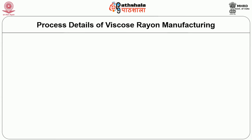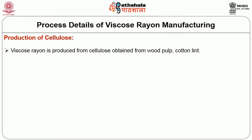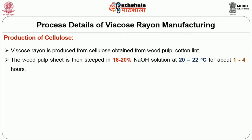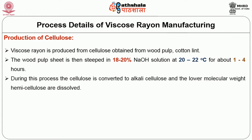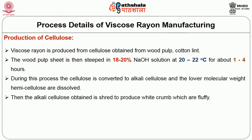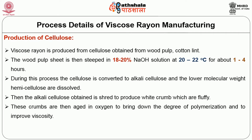Let us get into the details of the manufacturing process of viscose rayon and the production steps involved. Viscose rayon is produced from cellulose obtained from wood pulp or cotton lint. The wood pulp sheet is steeped in 18 to 20% concentrated caustic soda (NaOH) solution at 20 to 22 degrees Celsius for about 1 to 4 hours. During this process, the cellulose is converted to alkali cellulose and the lower molecular weight hemicellulose are dissolved. Pressing is done to remove excess liquid. Then, the alkali cellulose obtained is shredded to produce white fluffy crumbs. These crumbs are then aged in oxygen to bring down the degree of polymerization and to improve viscosity.